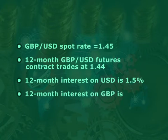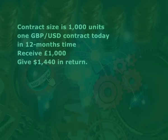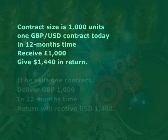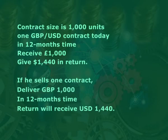A financial future is a contract to convert an amount of currency at a time in the future at an agreed rate. Suppose the contract size is 1,000 units. If you buy one GBP/USD contract today, in 12 months' time you will receive 1,000 pounds and give 1,440 dollars in return. The arbitrator thinks the price of the futures contract is too high. If he sells one contract, he will have to deliver £1,000 in 12 months' time and in return will receive US$1,440.